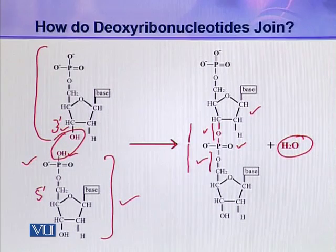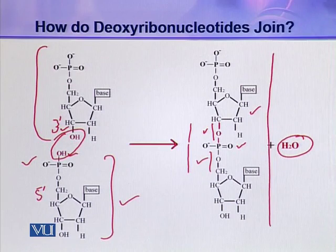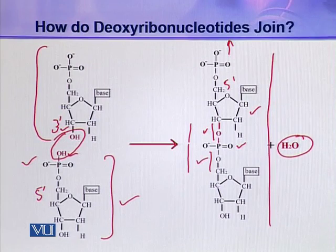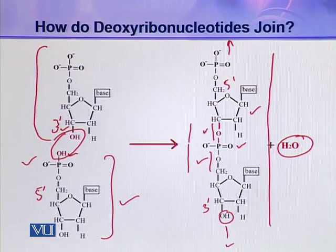All successive nucleotides are linked through this phosphodiester linkage. This whole molecule is a dinucleotide. In this dinucleotide, the phosphate attached at the 5 prime is still free to form an ester linkage with another nucleotide. Similarly, the hydroxyl present at the 3 prime is again available to make an ester linkage with another nucleotide. In this way, the chain grows and makes a polynucleotide chain.